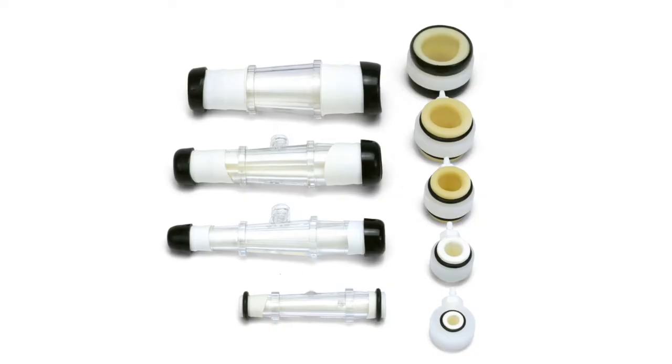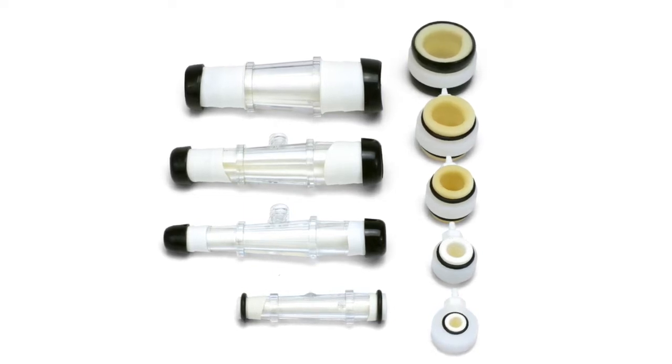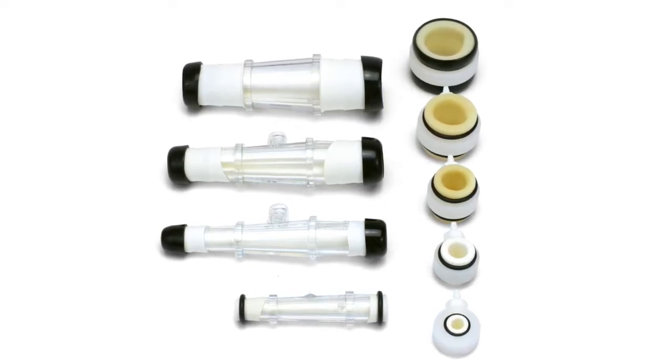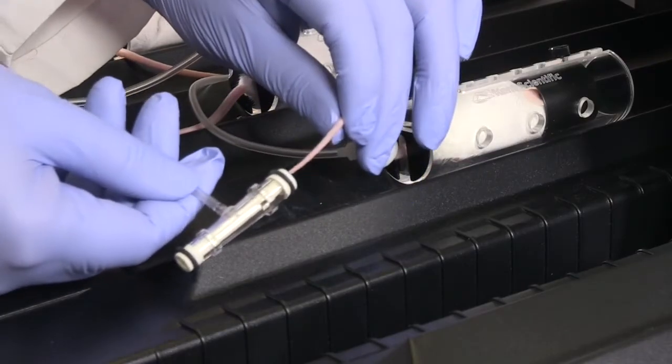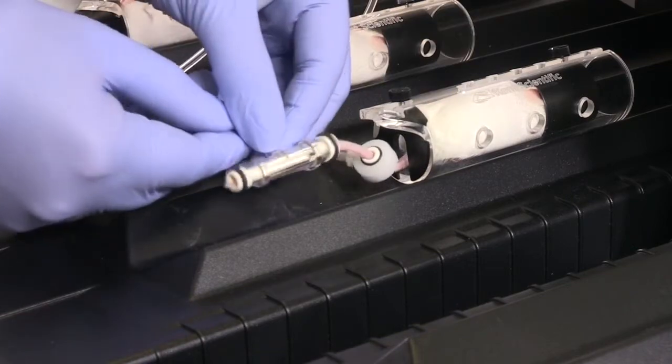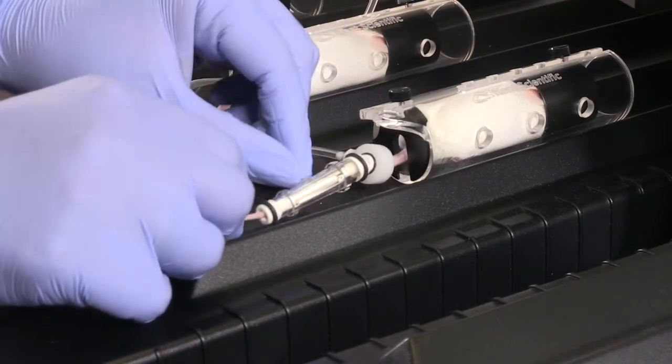Two different cuff sizes are provided with each cuff kit. Choose which size fits best and be consistent in the size and placement across each of your animals. After the occlusion cuff is placed, slide the VPR cuff behind it. The VPR cuff should fit loosely.